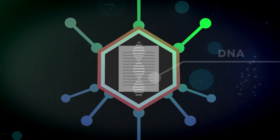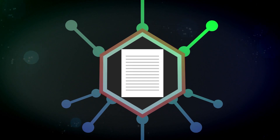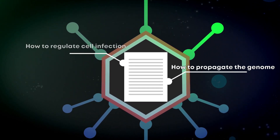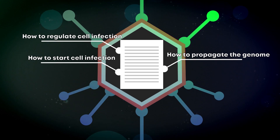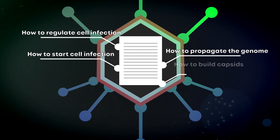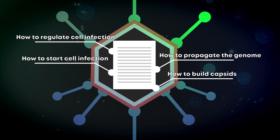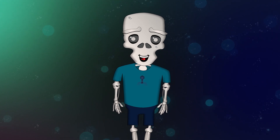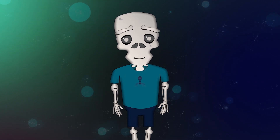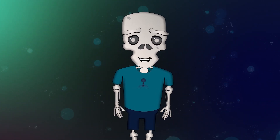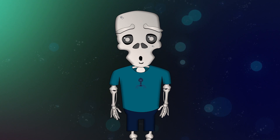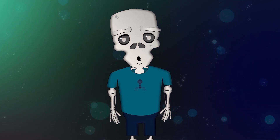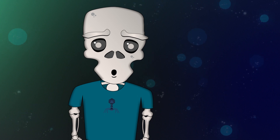All important instructions are kept here: how to propagate the genome, how to regulate and start the process of cell infection, how to build capsids for new viruses. Long story short, a virus is like an eternal wanderer. It is always ready to pack. It carries only the essential things that will help it break into someone else's house, settle in, and start dividing.